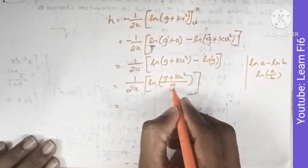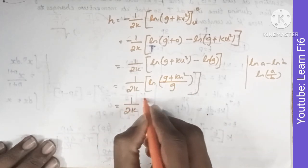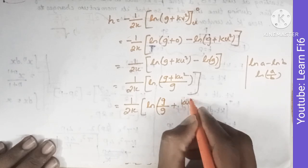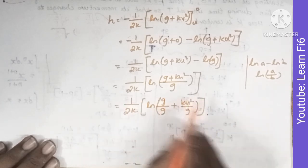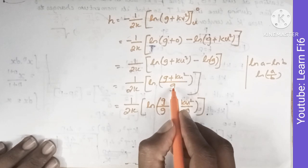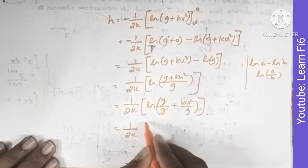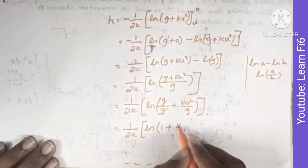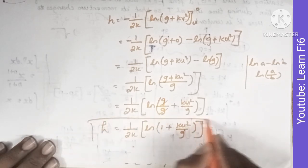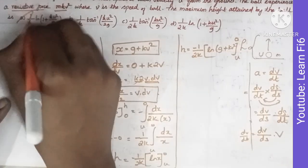Splitting the fraction inside the logarithm: (g plus ku²)/g equals g/g plus ku²/g, which simplifies to 1 plus ku²/g. Therefore the final answer is h equals 1/(2k) times ln(1 plus ku²/g). This matches option A in the question.